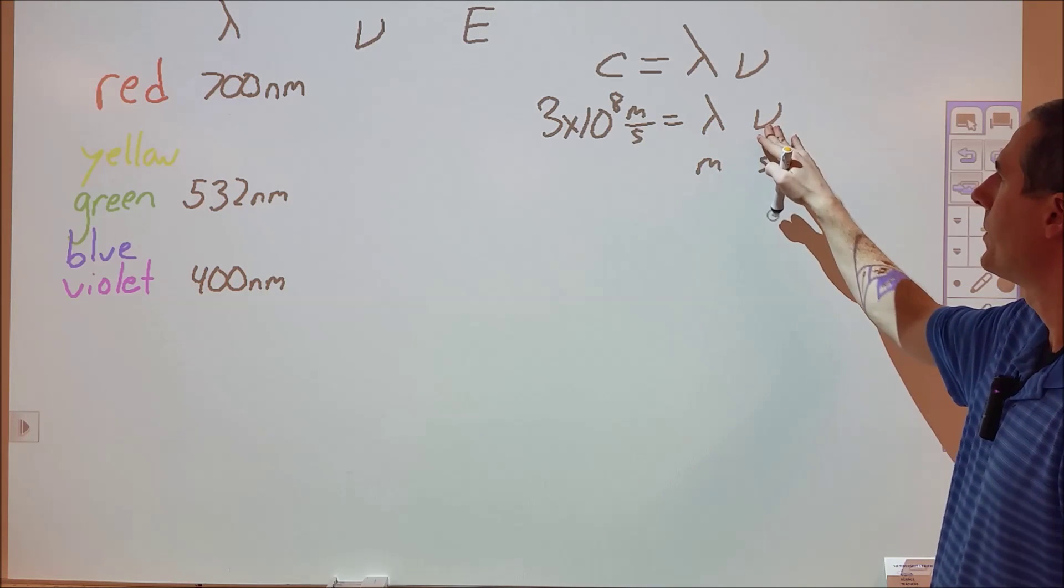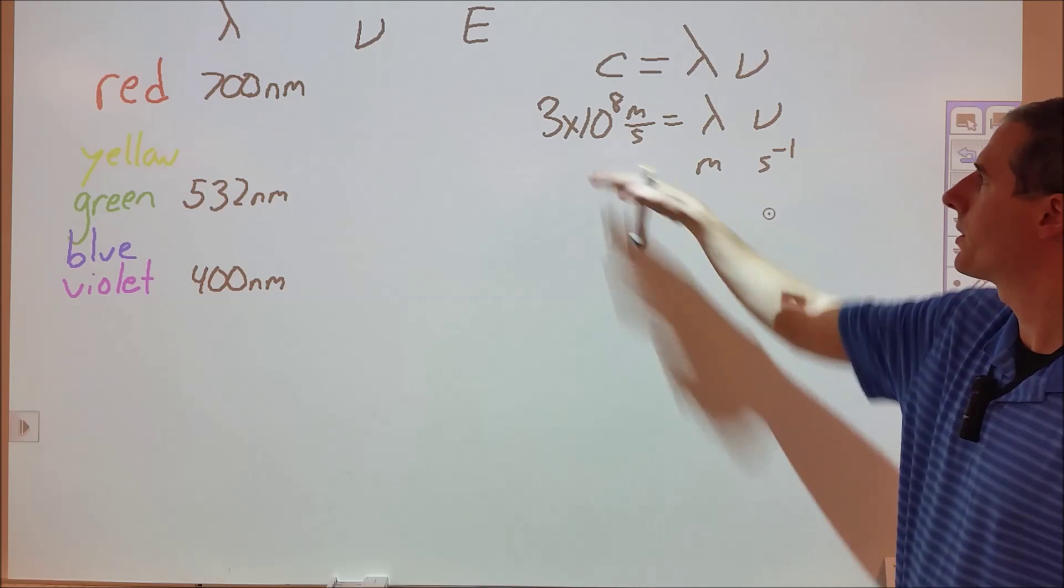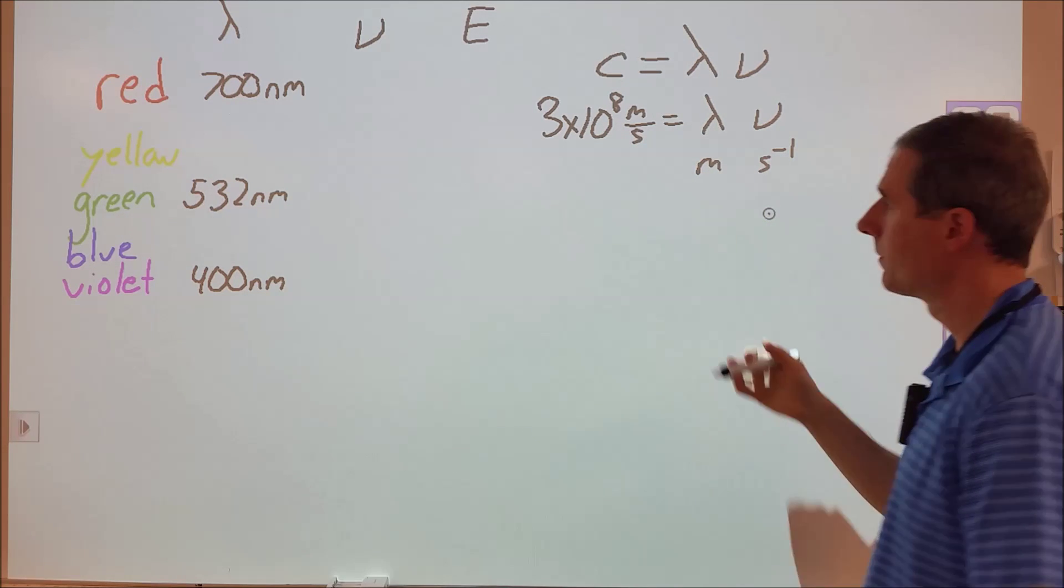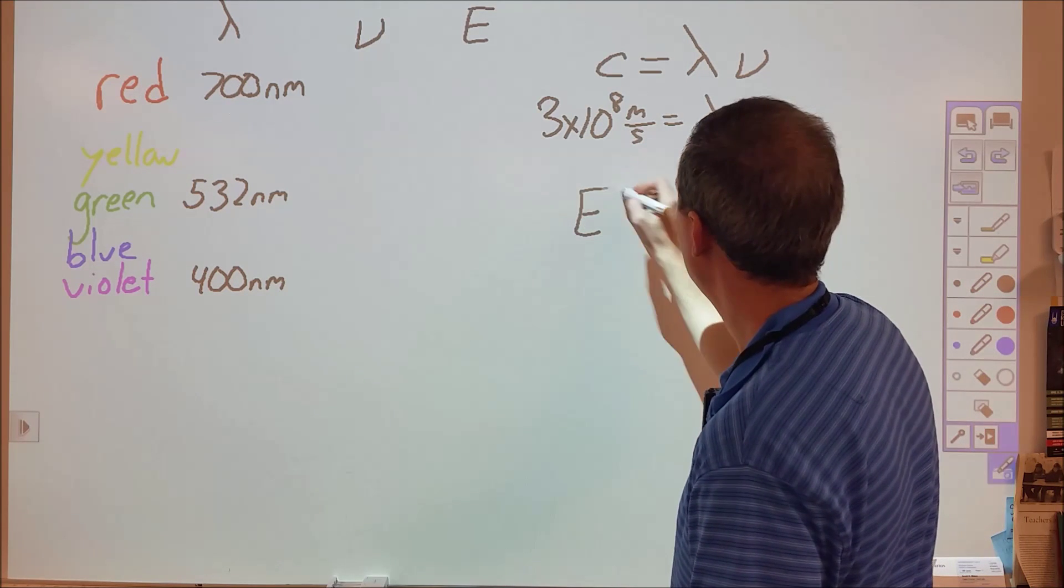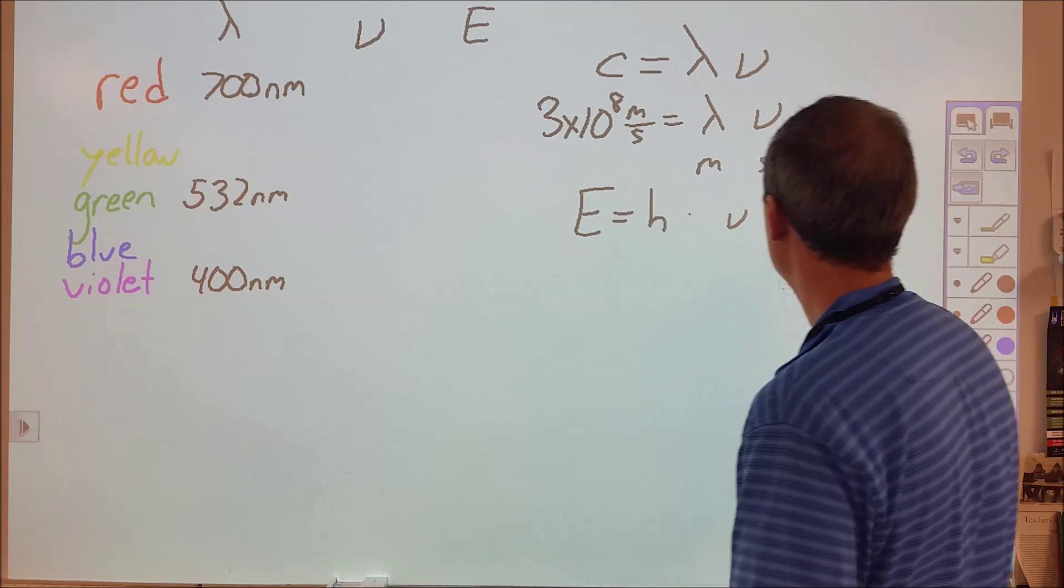So if we know the wavelength or the frequency, we can find the other one through this constant of speed of light. There's a second equation.